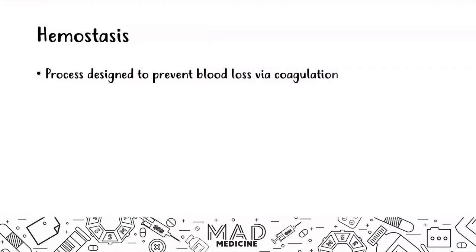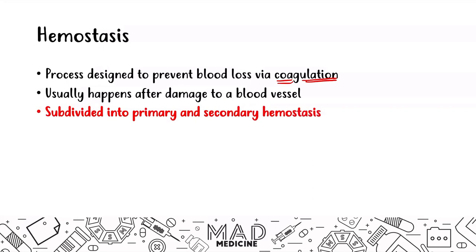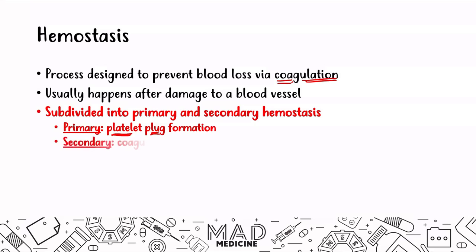Hemostasis is a process designed in our body to prevent blood loss via coagulation. Coagulation is a broad term that can involve both blood as well as other aspects in the plasma. Usually this happens after damage to a blood vessel, and that damage leads to a cascade of events. You can divide hemostasis into primary and secondary hemostasis. Primary hemostasis occurs when platelets form a platelet plug to stabilize the damaged area. After that, secondary hemostasis takes place via the coagulation cascade, allowing for repair of the damaged area.